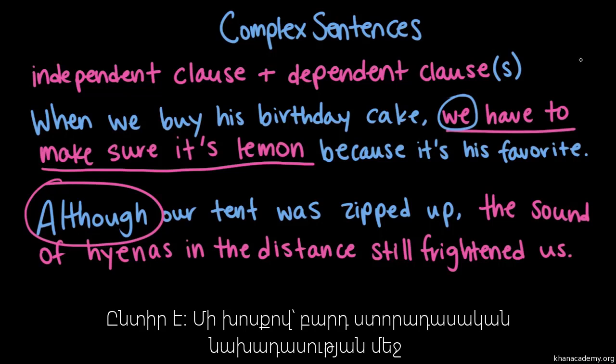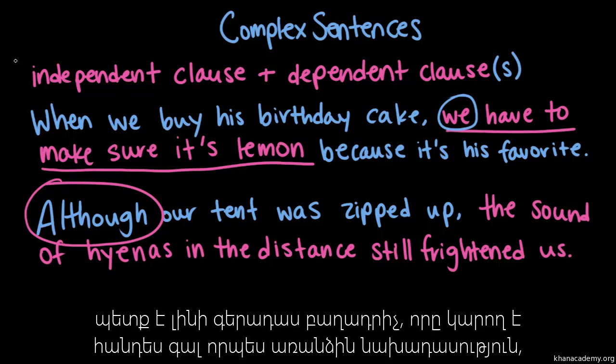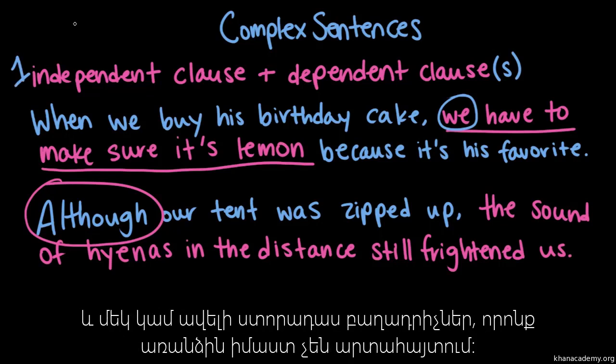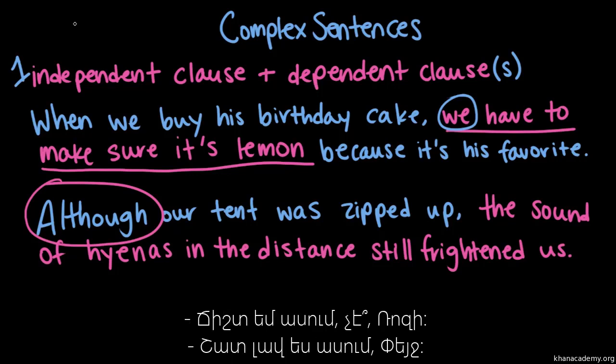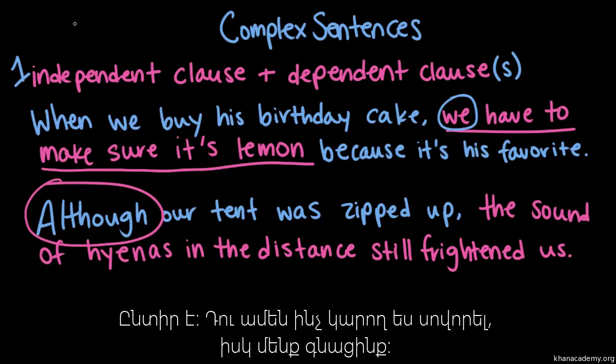So that's complex sentences: it's an independent clause that can be a sentence by itself, and one or more dependent clauses which can't be sentences by themselves, all put together in one big sentence. Sounds good to me, Paige. You can learn anything. Paige out. Rosie out.